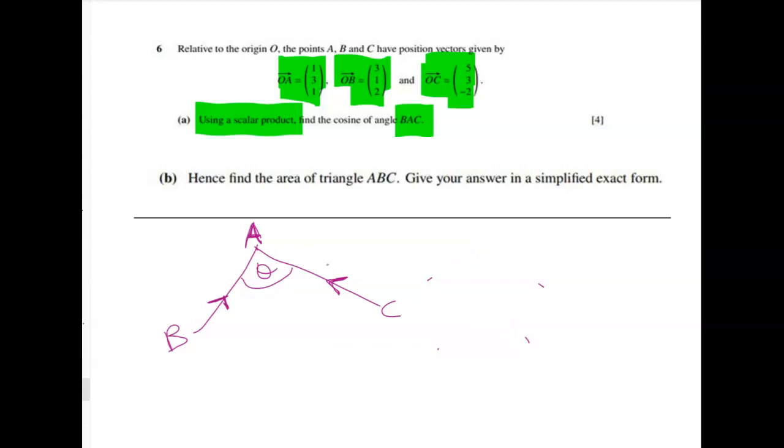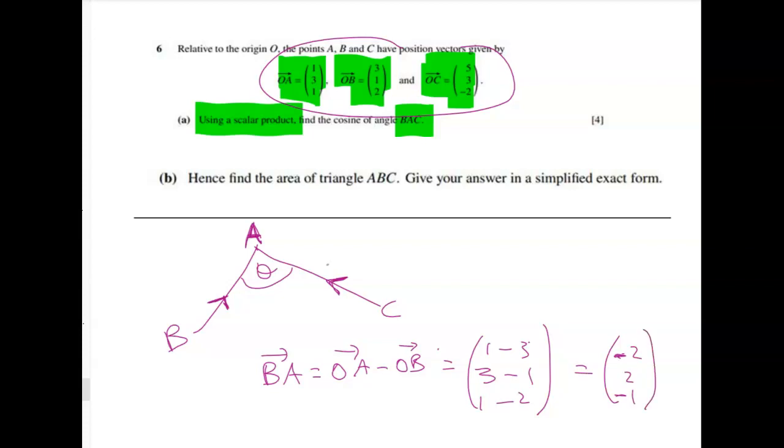So the next thing I need to do is to find the vector from B to A and the vector from C to A. So vector BA is OA minus OB, which gives me, so working with these vectors up here, OA minus OB will be 1 minus 3, and then it's 3 minus 1, and then it's 1 minus 2. So that gives me negative 2, 2, and negative 1. So that's BA.